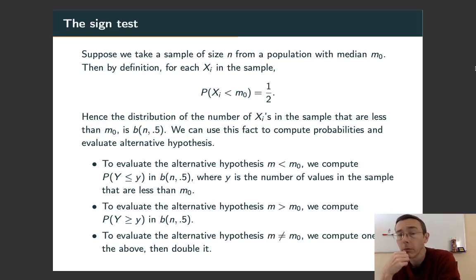To summarize that as our test statistic, we're going to use capital Y, the number of values in our sample that are less than the hypothesized median. If we're evaluating a one-sided null hypothesis m less than m0, we're going to compute the probability of getting a smaller y value than that in B(n, 0.5).